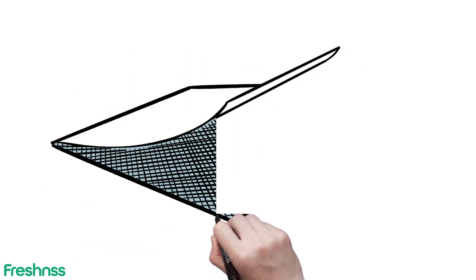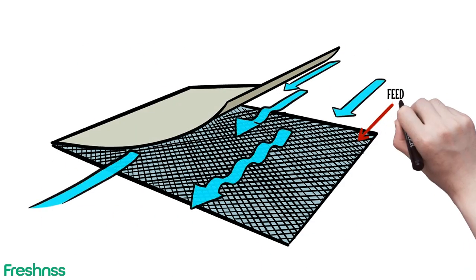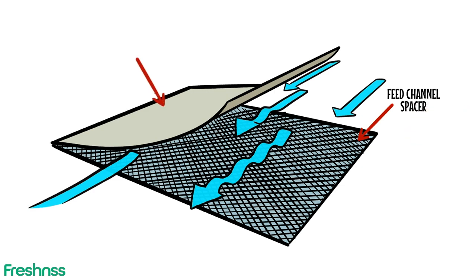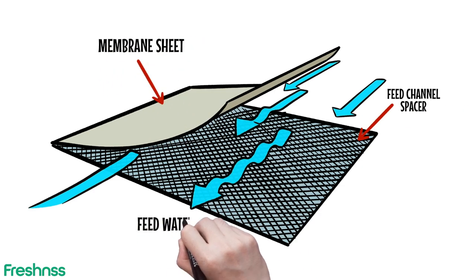The membrane sheet is combined with a feed channel spacer that creates space between the membrane sheets for the feed water. This allows water to flow evenly across the entire membrane surface, even under high pressure.